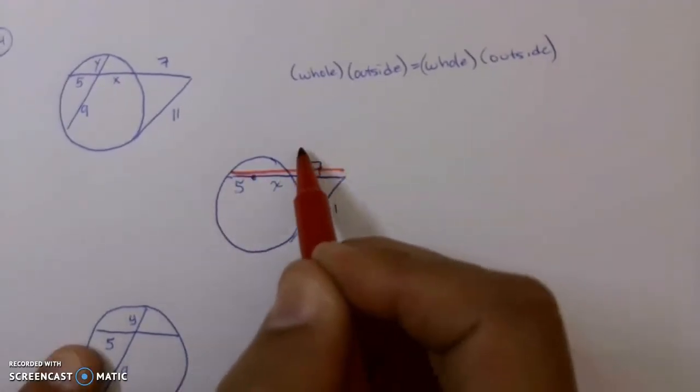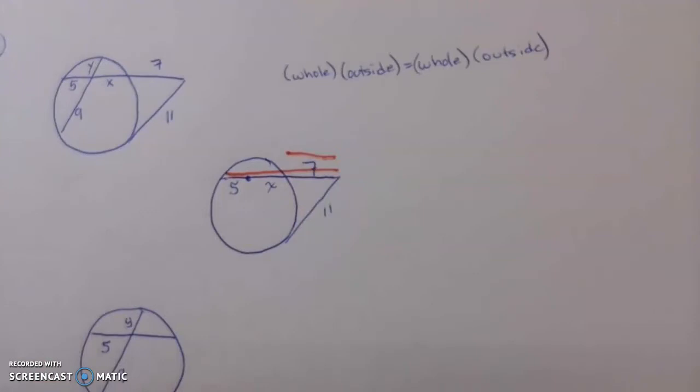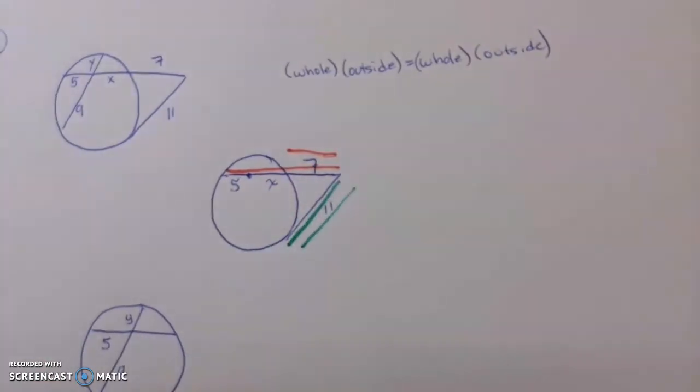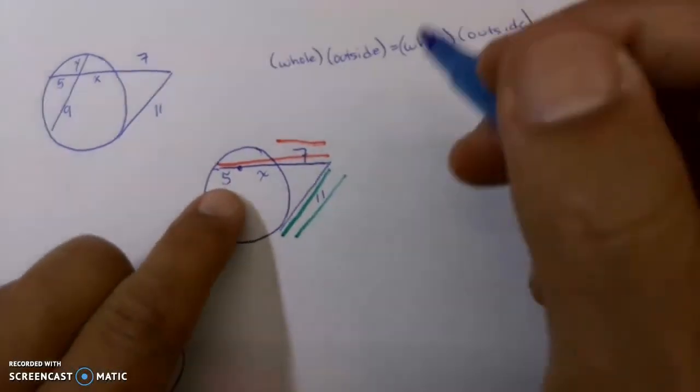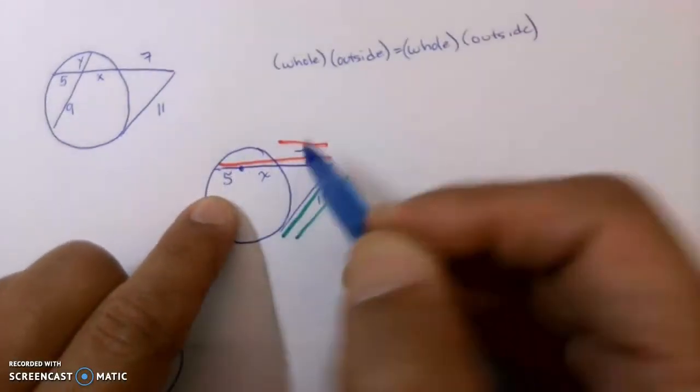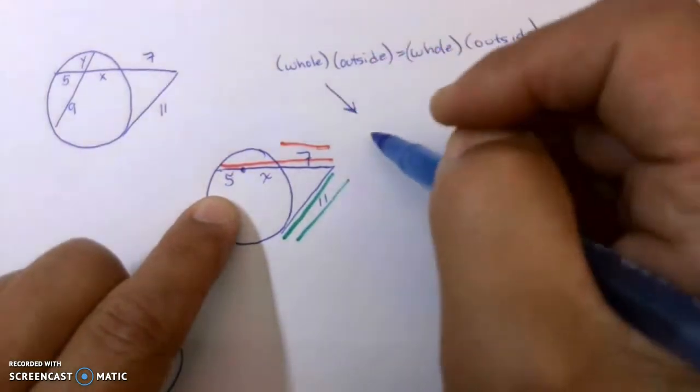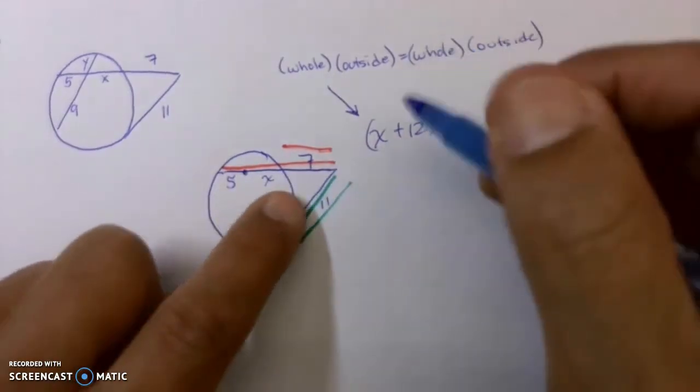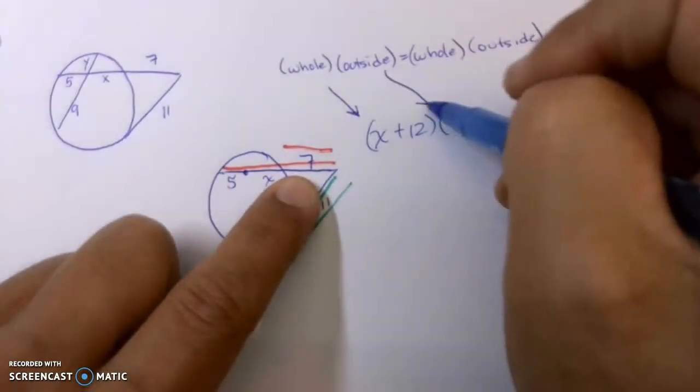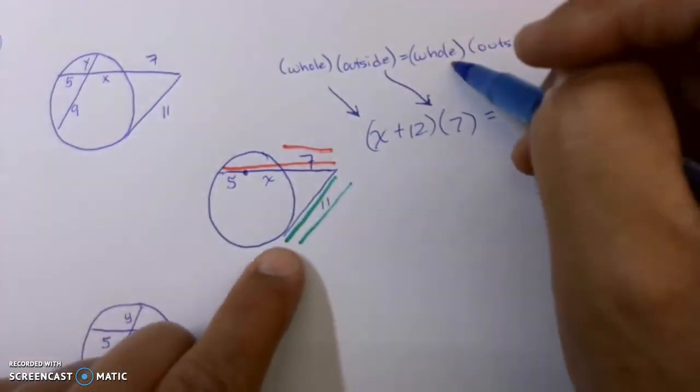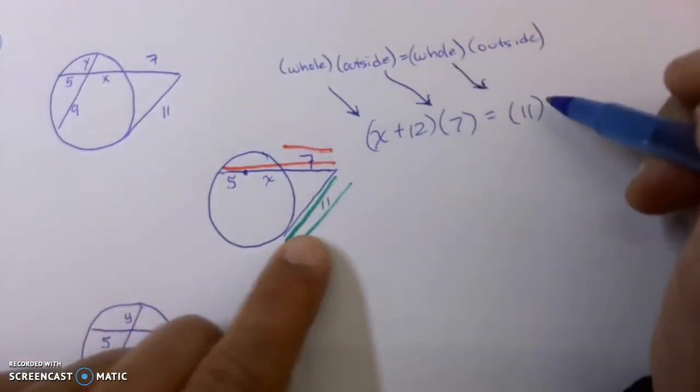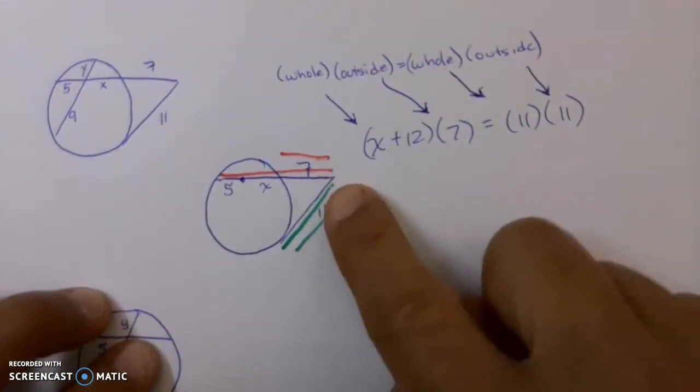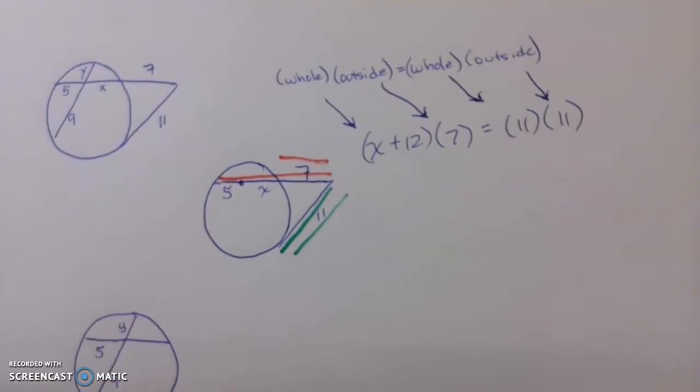So I'm going to go red times the outside red, and then go green times the outside green. Okay, so the whole red is 5 plus X plus 7. 5 plus 7 is 12, so this is like X plus 12. That's the whole line here in red. The outside portion is just the 7. The whole line here in green is 11. The outside portion is also 11. That happens to be a tangent line, so both the entire line and the green, the outside portion, is 11.